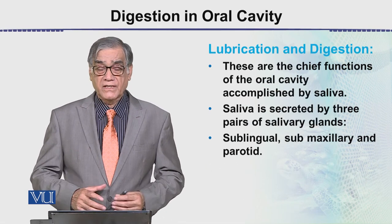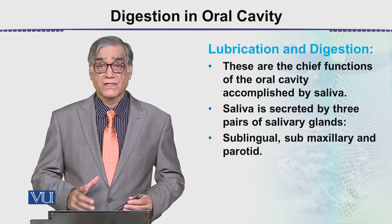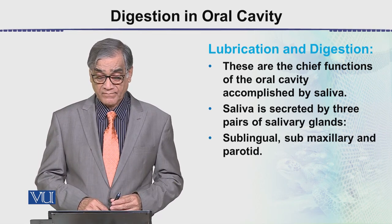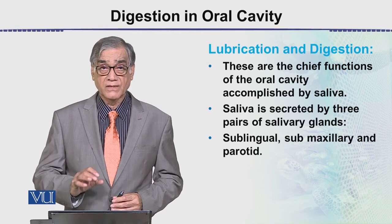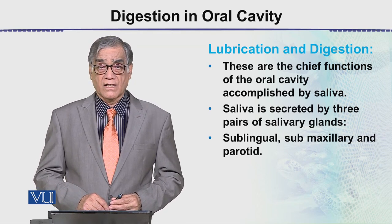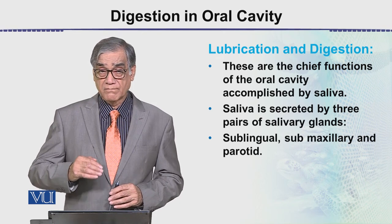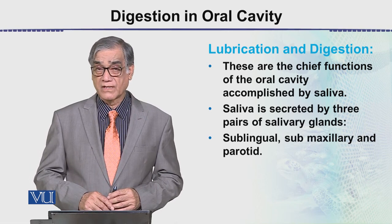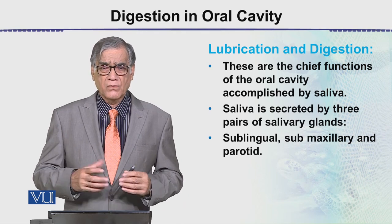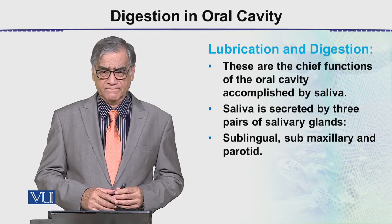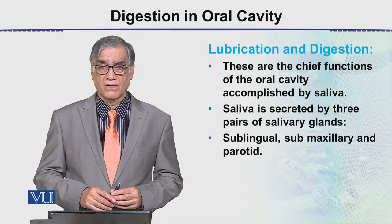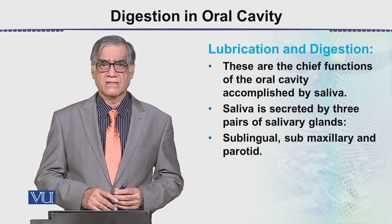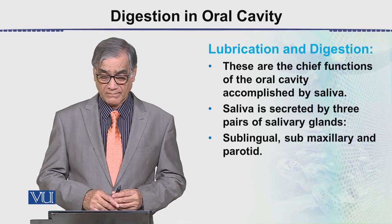Lubrication and digestion are the chief functions of the oral cavity, accomplished by saliva. Saliva is secreted by three pairs of salivary glands: sublingual — that is below the tongue; sub-maxillary — that is behind the jaws; and parotid — which are in front of the ears. The parotid glands are the ones that get infected in mumps, which is a viral disease.